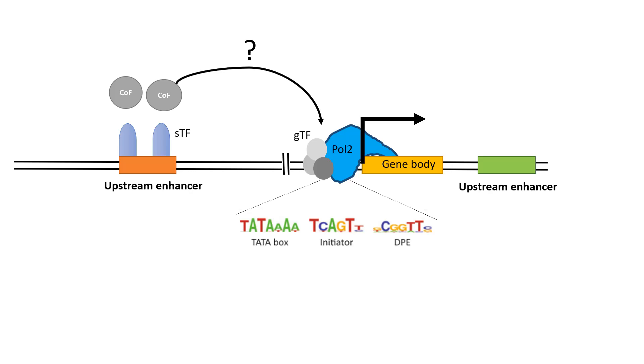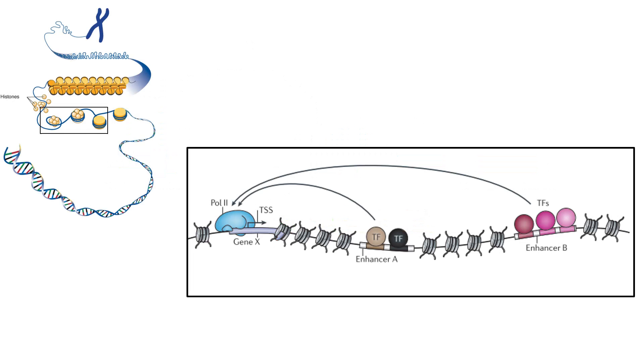How do enhancers work? The general transcription factors of TF2D family bind to the promoter and recruit Pol2. Upstream enhancer elements bind to specialized transcription factors. These specialized transcription factors can interact with cofactors which could be either corepressors or coactivators. If it's a coactivator, these upstream enhancer sequences undergo DNA folding mechanism such that these cofactors and specialized transcription factors can interact with this Pol2 complex and thereby regulate the frequency and speed of transcription.